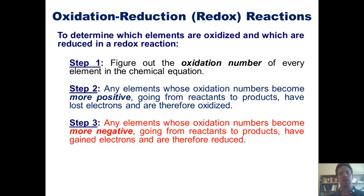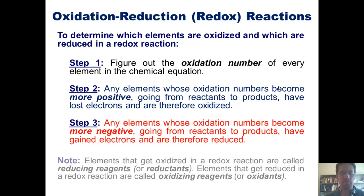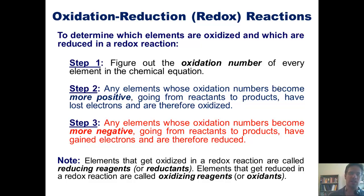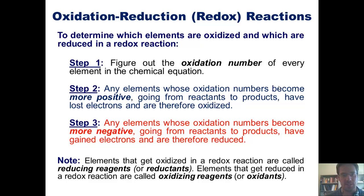Parenthetically, I want you to know something more. Elements that get oxidized in redox reactions are called reducing agents, or reductants. Elements that get reduced in a redox reaction are called oxidizing agents, or oxidants.